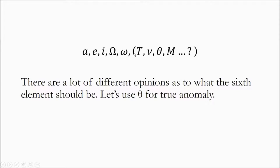For the sixth element there's a little bit of disagreement, or maybe different priorities, as to what information you need. I went to three different books when making this episode, and each one used a different orbital element for the sixth one: T for time of periaps passage, nu or theta for true anomaly, and m for mean anomaly. For now let's use theta for true anomaly — most places use nu, but when I learned it I used theta, so I'll stick with what I know.